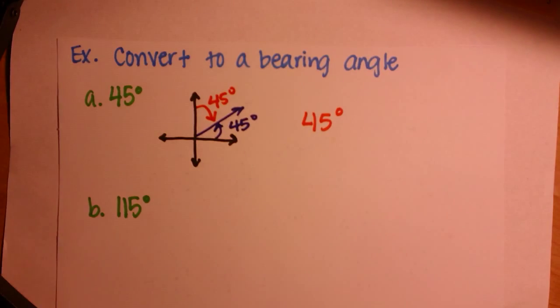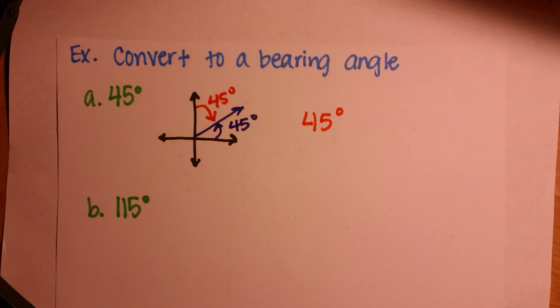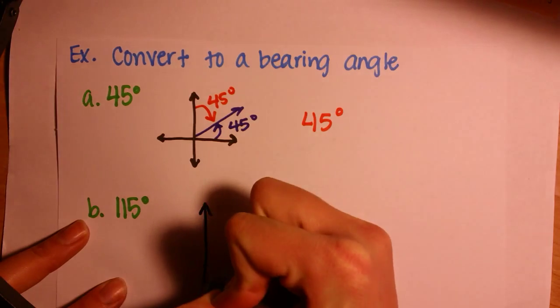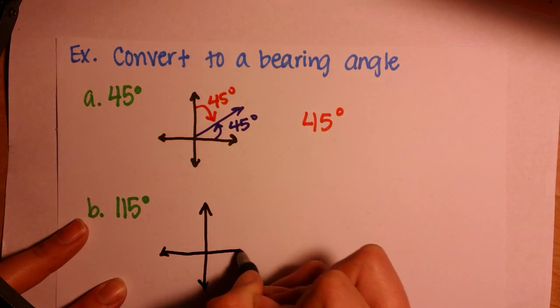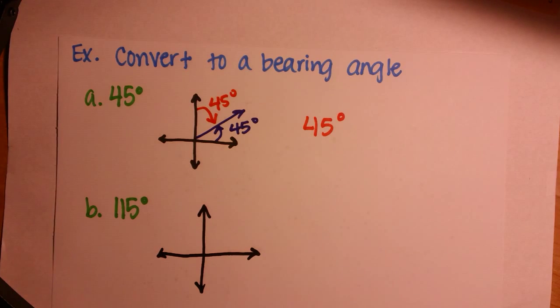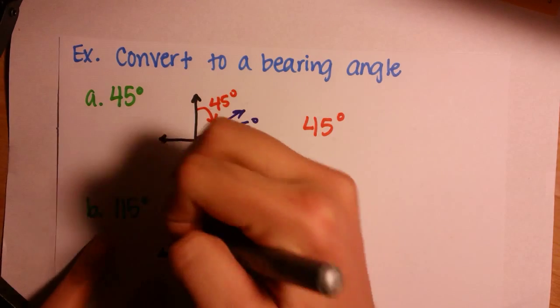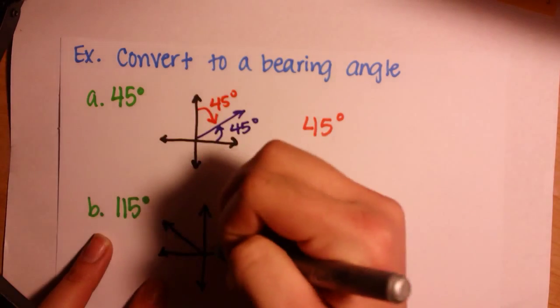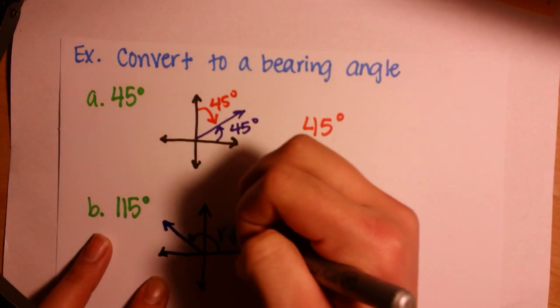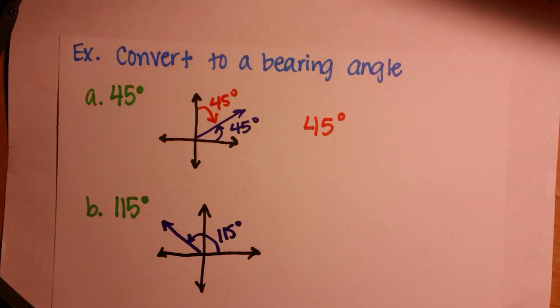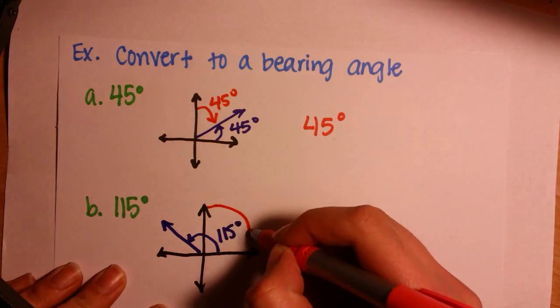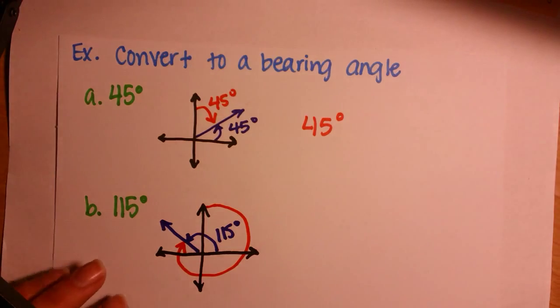Now I'm going to let you try the next one. We can set it up. And we know that 115 degrees measured from the x-axis will be this way. And to measure bearing, we have to go clockwise from due north. And you can calculate that angle.